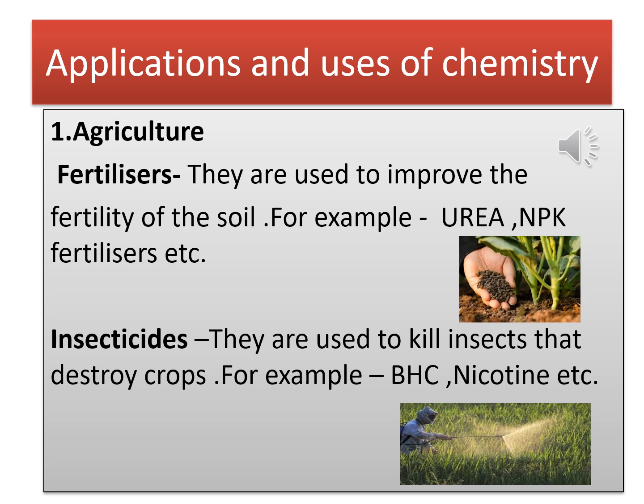First is fertilizers. Fertilizers are used to improve the fertility of the soil. For example, Urea and NPK fertilizers. NPK stands for Nitrogen, Phosphorus, and Potassium.